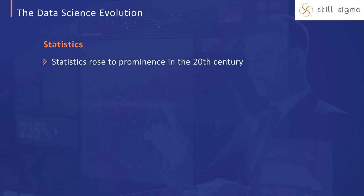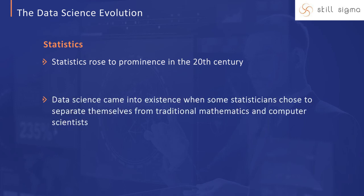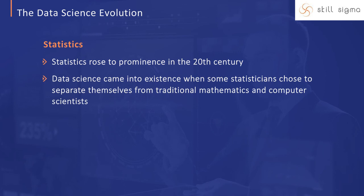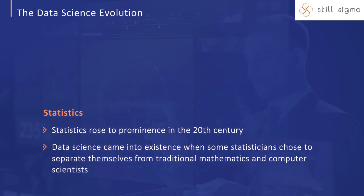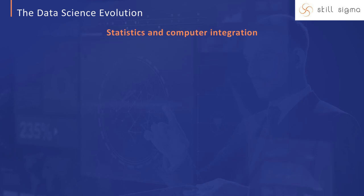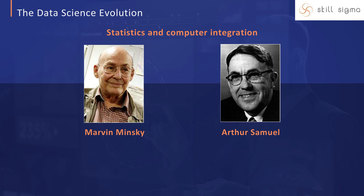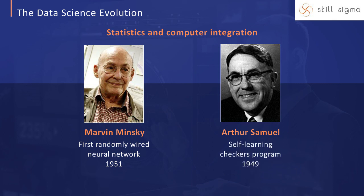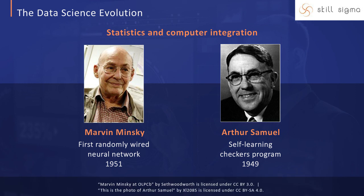Statistics rose to become a recognized and prominent field in the 20th century, while data science as we know it has only been around since the new millennium. Data science came into existence when some statisticians chose to separate themselves from traditional mathematics and computer scientists. The first real examples of statistics and computer integration were pioneered by Marvin Minsky and Arthur Samuel, two men who are arguably the forefathers of machine learning. Minsky created the first randomly wired neural network, codenamed SNARK, in 1951, while in 1949 Samuel designed a self-learning checkers program for a commercial IBM 700 computer. From here on, the tide began to change, with computers sharing the driving seat with humans in the advancement of statistical analysis.